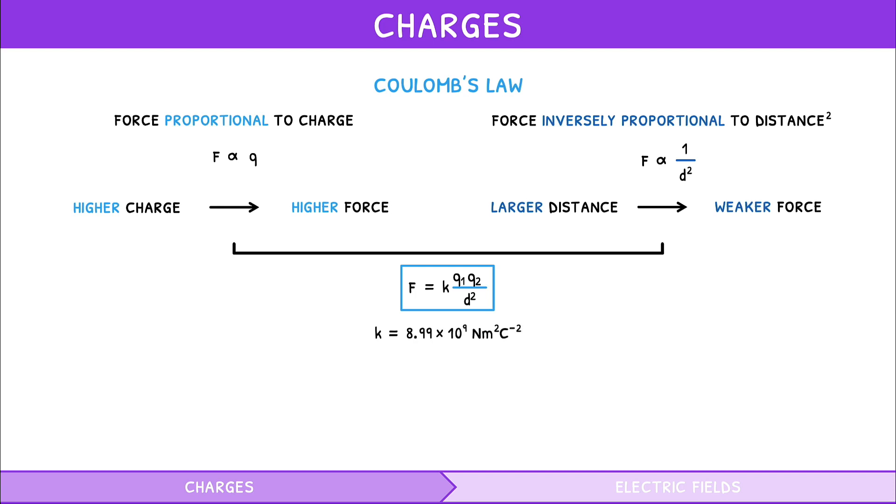The IB expects you to know that this value is calculated from another constant, the permittivity of free space. Via the formula, Coulomb constant equals 1 divided by 4 pi times permittivity of free space. In this, the value of the permittivity of free space is 8.85 times 10 to the minus 12 Coulomb squared per newton meter squared.